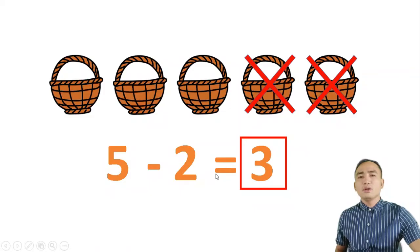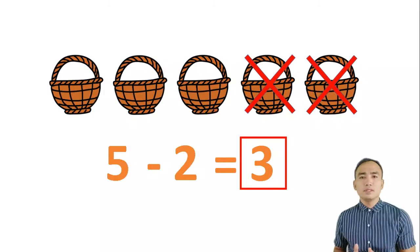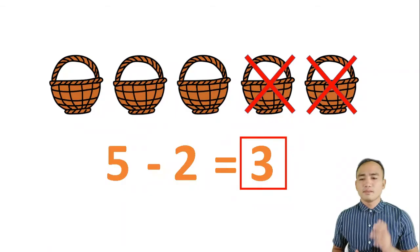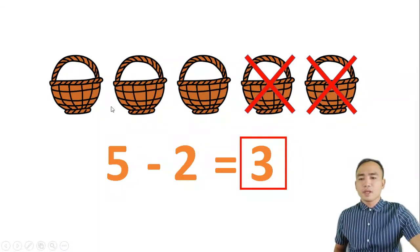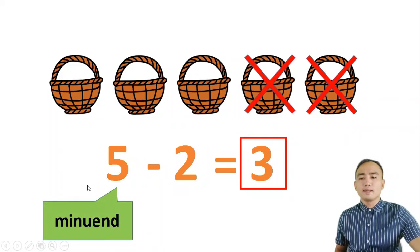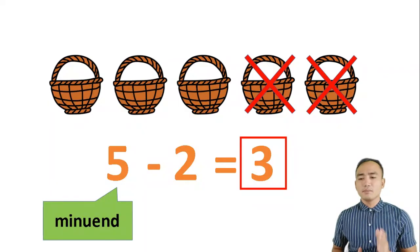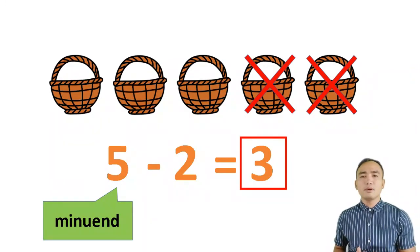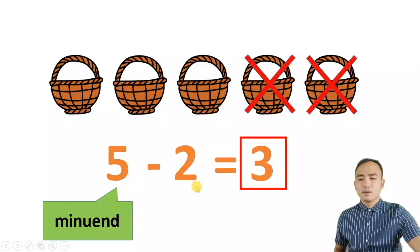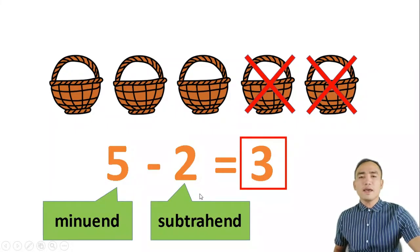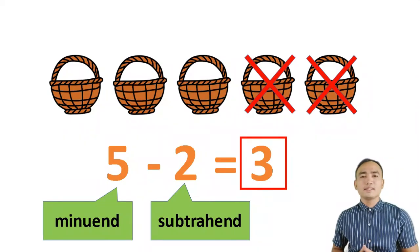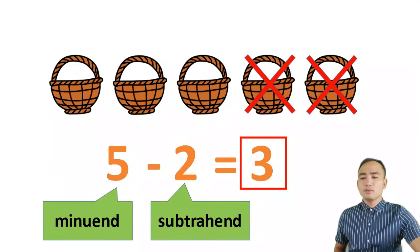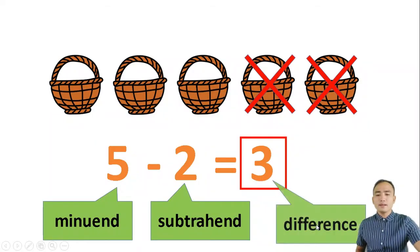Do you know what are the important terms used in subtraction? Let us take this example: 5 baskets minus 2 baskets is 3 baskets. 5 here is what we call the minuend — it is the first number in subtraction, and it is the number to be subtracted from. 2 here is called the subtrahend — it is the second number in subtraction, and it is the one that subtracts the minuend. While 3 is called the difference, or the answer in subtraction.